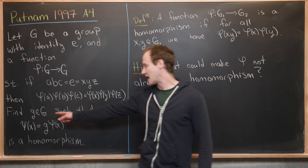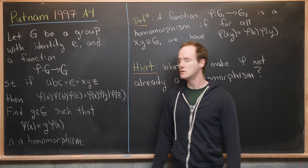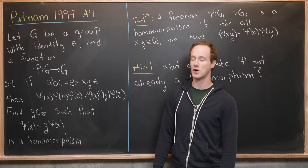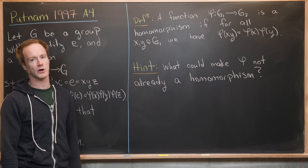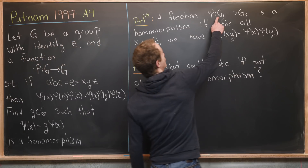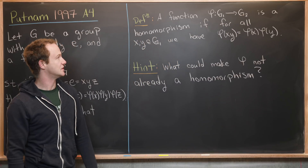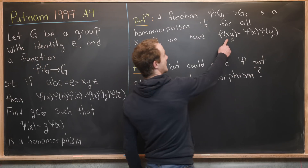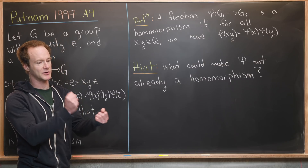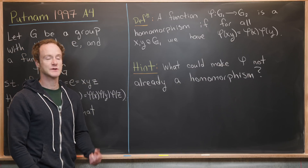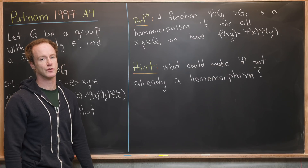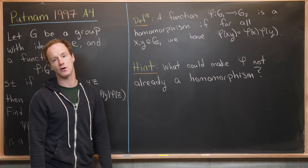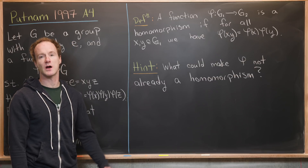What we want to do is find a g so that we can define a new function psi where psi(x) = g·phi(x), and that new function is a homomorphism. To recall: a function phi from a group G1 to another group G2 is called a homomorphism if for all x and y in G1, phi(x·y) = phi(x)·phi(y) — that is, the function preserves the group operation. My hint is: what could make phi not already a homomorphism?